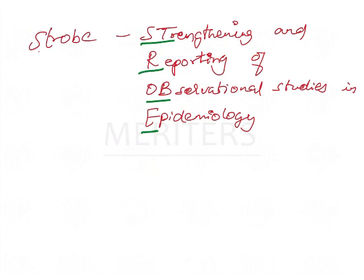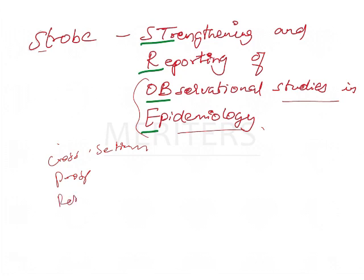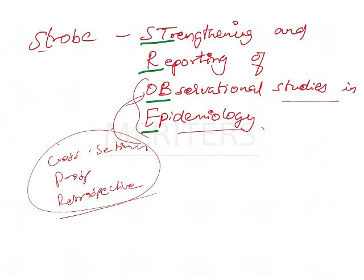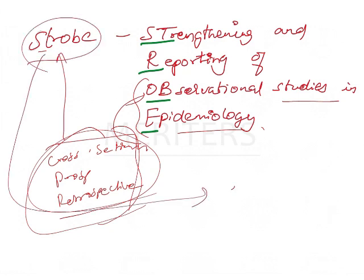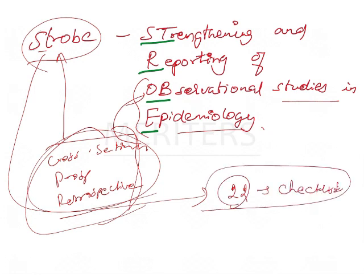These guidelines are used for standardization. Coming to the STROBE guideline — STROBE stands for Strengthening the Reporting of Observational Studies in Epidemiology. Observational studies include cross-sectional, prospective, and retrospective studies. To conduct these kinds of studies, we should stick to the STROBE guidelines, which have 22 checklist items. At UG level, we should know which guideline is used for which kind of study.